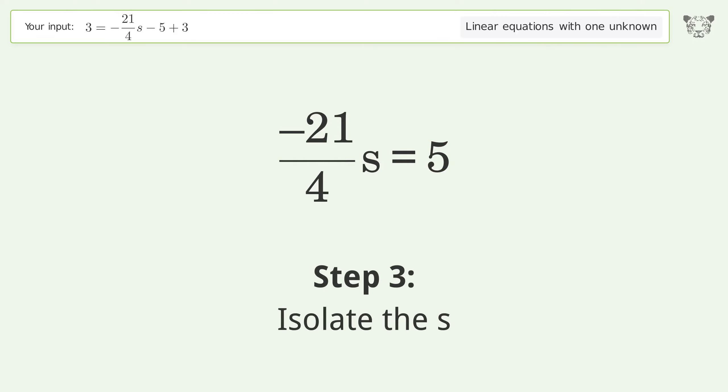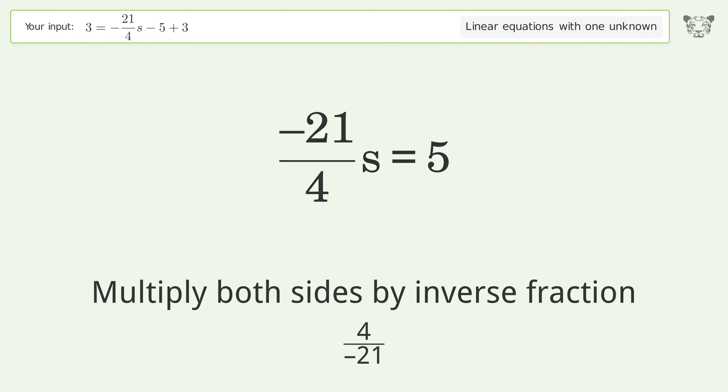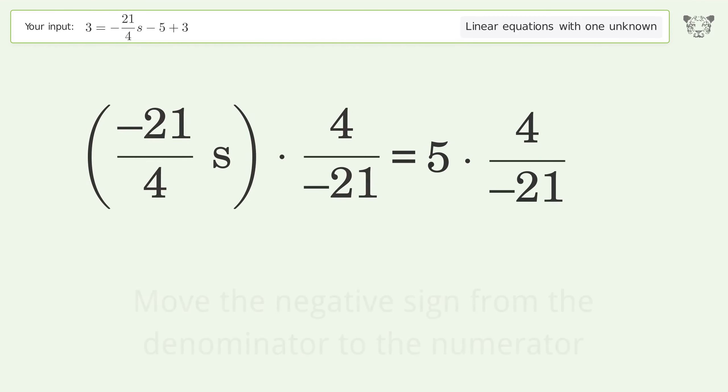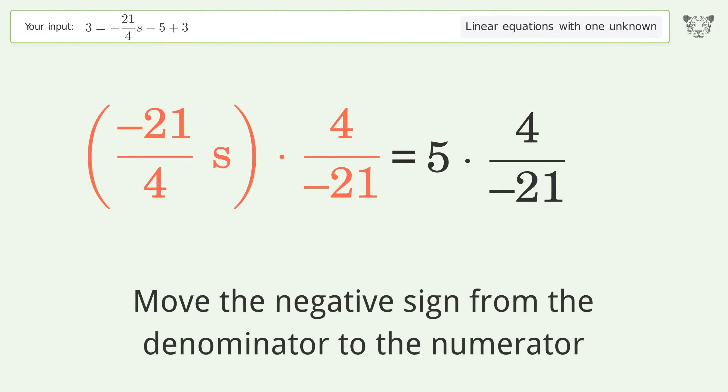Isolate the s. Multiply both sides by the inverse fraction, 4 over negative 21. Move the negative sign from the denominator to the numerator.